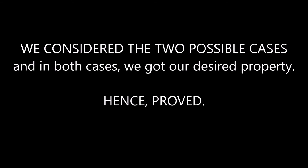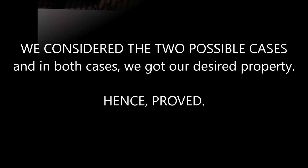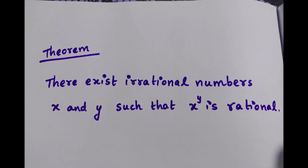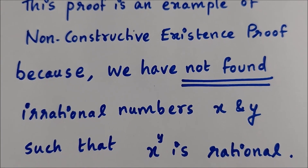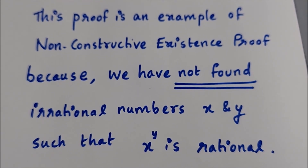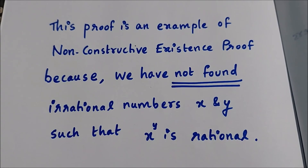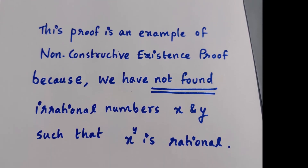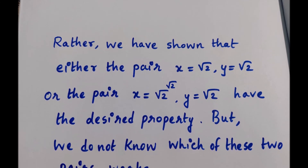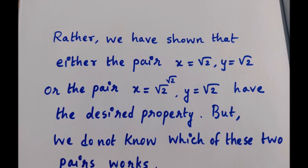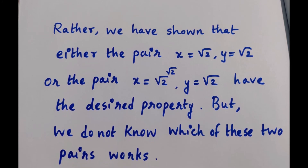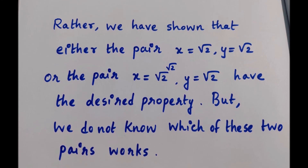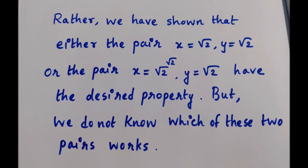Since √2 raised to √2 has only two possibilities — either it is rational or it is irrational — and since we have exhausted all these cases, we can surely say that there exist irrational numbers X and Y such that X raised to Y is rational. This proof is an example of a non-constructive existence proof because we have not found the exact irrational values of X and Y. Rather, we have shown that either the pair X = √2, Y = √2, or the pair X = √2^√2, Y = √2 has the desired property — but we do not know which of these two pairs works. One among these pairs will definitely work.